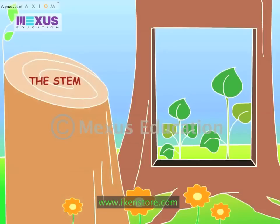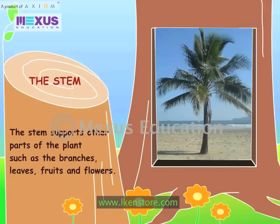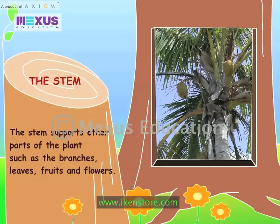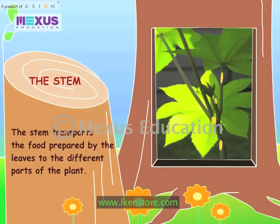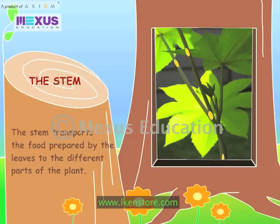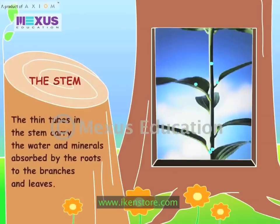The stem supports other parts of the plant such as the branches, leaves, roots and flowers. The stem transports the food prepared by the leaves to the different parts of the plant.